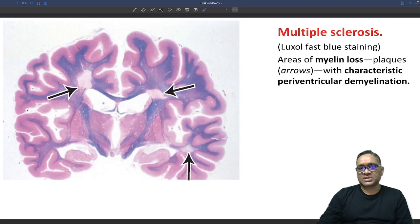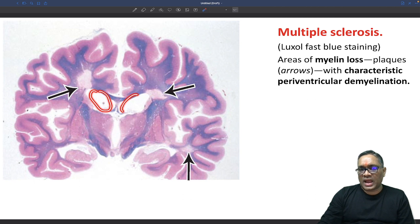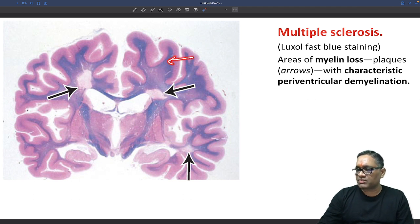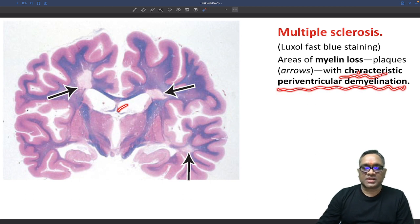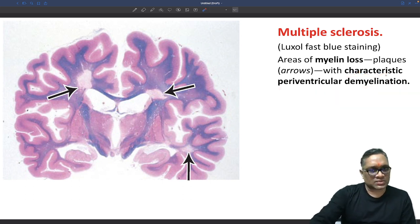Here in this picture you can see the ventricle and around it there are pale areas. Normally, Luxol Fast Blue stain shows dark blue color for intact myelin, but here you can see pallor due to myelin loss. This staining shows loss of myelin at the marked areas around the ventricle, which is characteristic periventricular demyelination seen in multiple sclerosis.